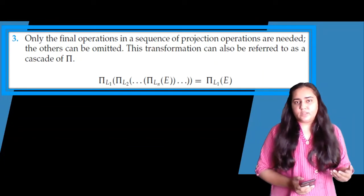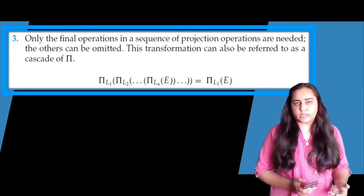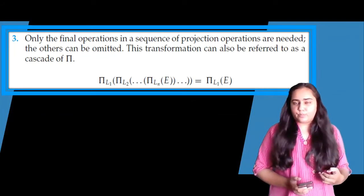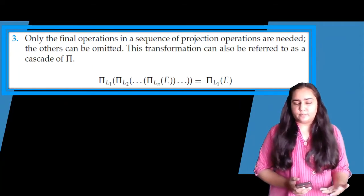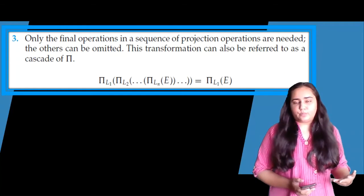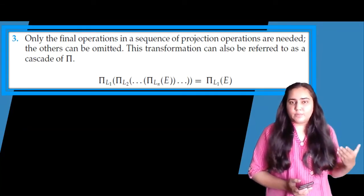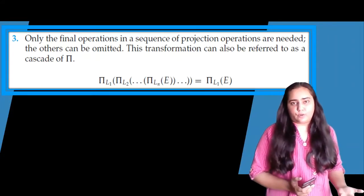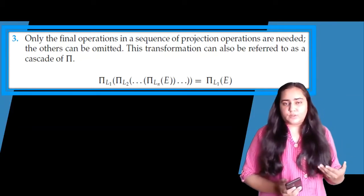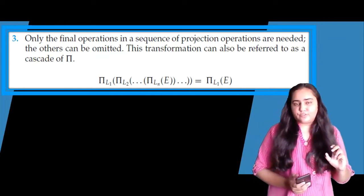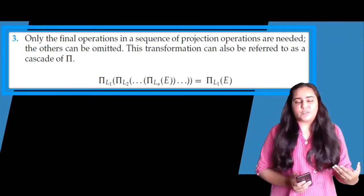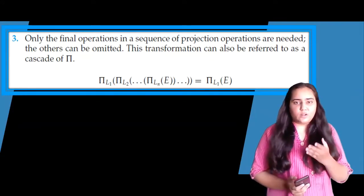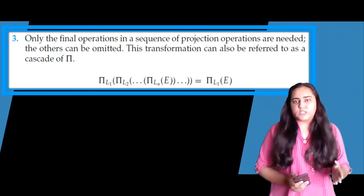The third rule says that only the final operation in a sequence of projection operations is needed; the others can be omitted. This transformation is referred to as a cascade of pi. The pi operation extracts columns from a table E. On the left-hand side, applying pi multiple times extracting columns L1 through L4, only L1 — the final list — matters. So on the right-hand side this equals just pi L1 of E.